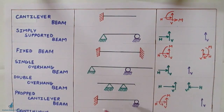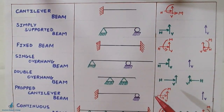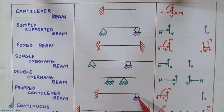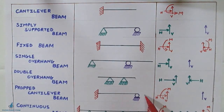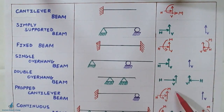One more type is the propped cantilever. In this beam, one end is not free — it is supported by a roller, or it may be supported by a hinge — while the other side is fixed. The total unknowns in this case are four: the fixed end gives three (horizontal, vertical, moment) and the roller gives one vertical reaction.